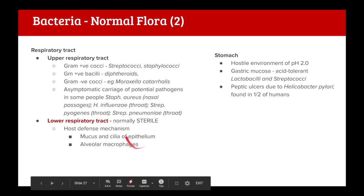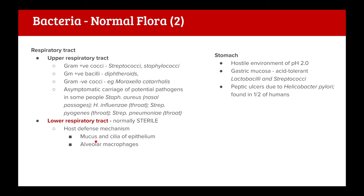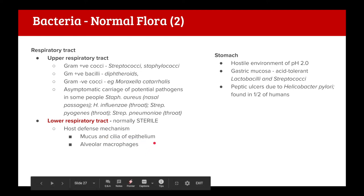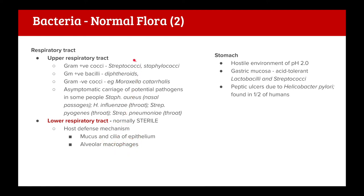In the respiratory tract: the lower tract is supposed to be sterile because of the mucociliary staircase - epithelial cells with cilia that secrete mucus and propel bacteria upwards toward the mouth to flush them out - and macrophages in the alveoli that get rid of bacteria. In the upper respiratory tract you can find gram positive cocci and bacilli, gram negative cocci, and others. You don't need to memorize all of these at this point.